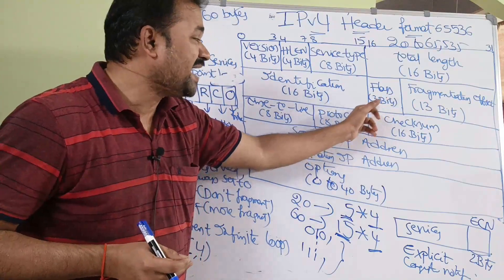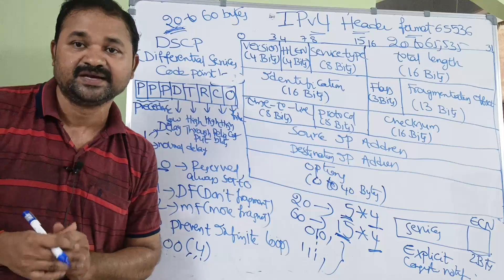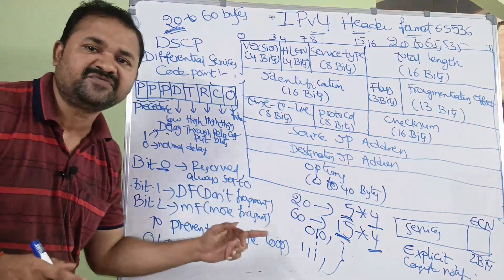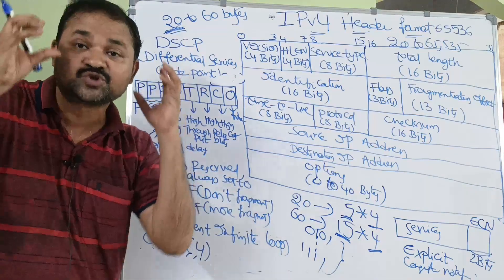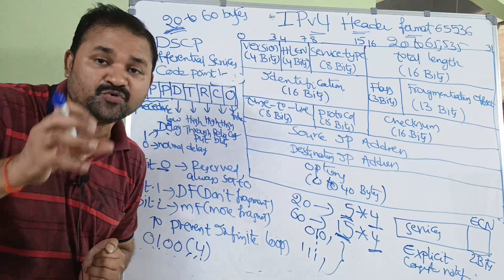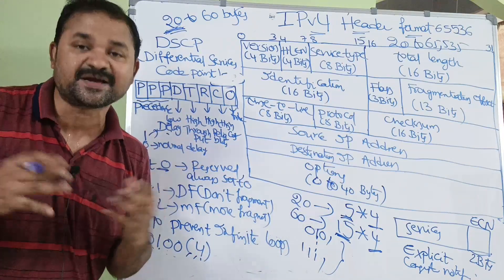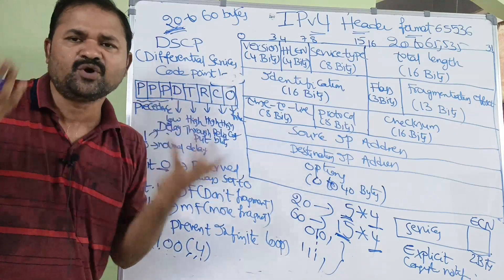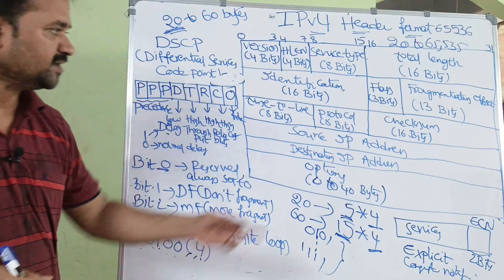And the next one is flags. Flags size is 3 bits. Bit 0 specifies a reserved bit — it is used for future use and is always set to 0. Bit 1 specifies DF — Don't Fragment — meaning the packet should not be fragmented. If DF is set to 1, then we should not fragment that packet. Bit 2 specifies MF — More Fragments. If MF is 1, there are more fragments. If MF is 0, it is the last fragment.